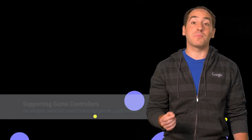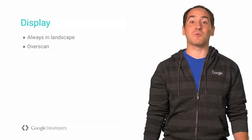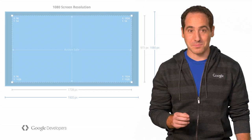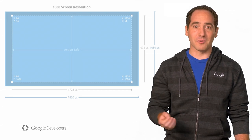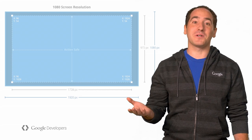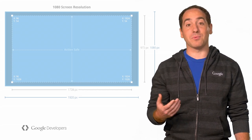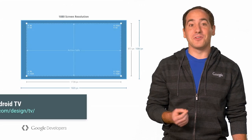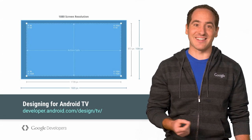There are also a couple of display considerations to keep in mind. First, the TV is always in landscape mode. And second, you should be aware of Overscan. Overscan refers to the tendency of some TVs to clip the outside of the display — it's a historical problem that isn't specific to Android. To handle it, just avoid placing important screen elements, like a player's score, within about 5% from the edge of the display. You can find more details about Overscan at this link.